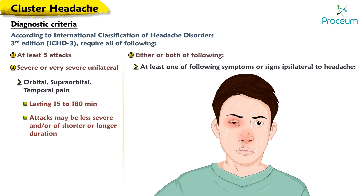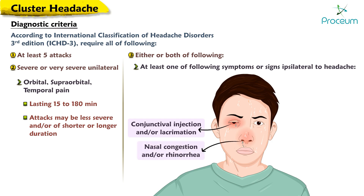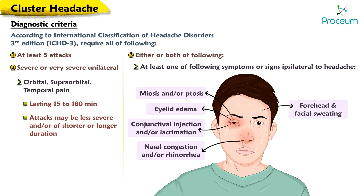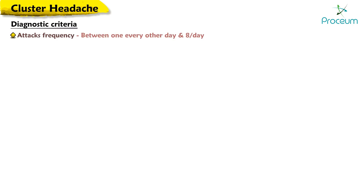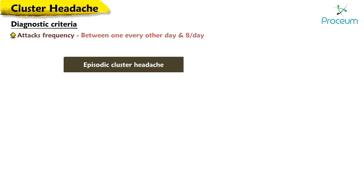Additionally, either or both of the following must be present: at least one ipsilateral symptom or sign — conjunctival injection and/or lacrimation, nasal congestion and/or rhinorrhea, eyelid edema, forehead and facial sweating, miosis and/or ptosis, or a sense of restlessness or agitation. Attacks must have a frequency between one every other day and eight per day. When attacks are less frequent, diagnostic criteria for episodic cluster headache still apply.